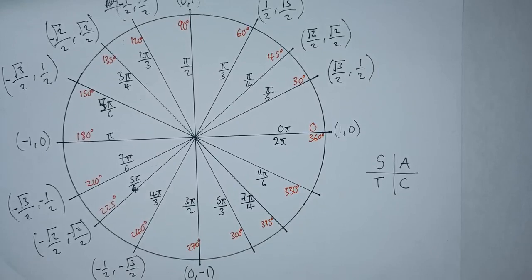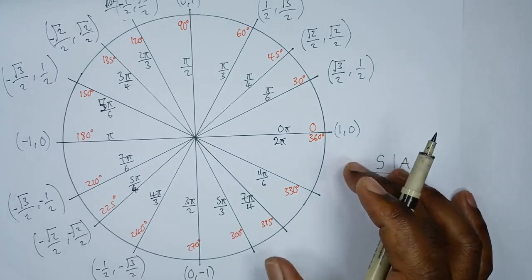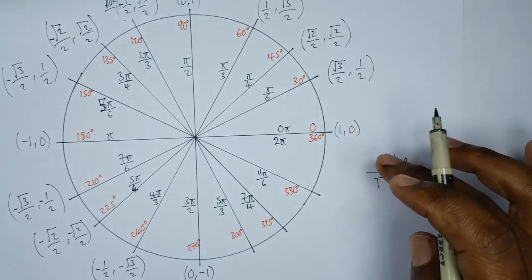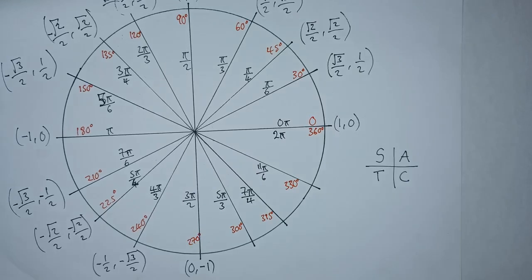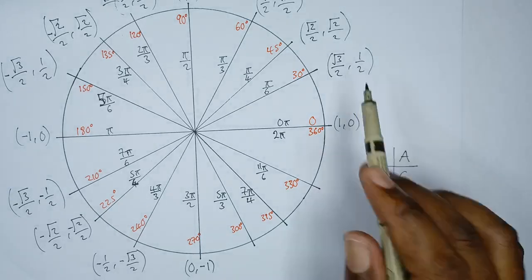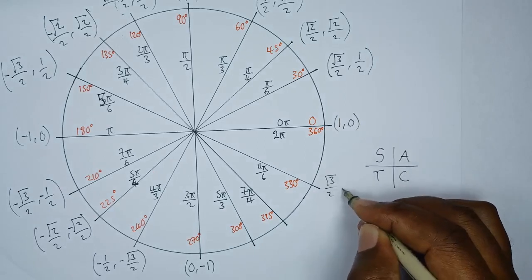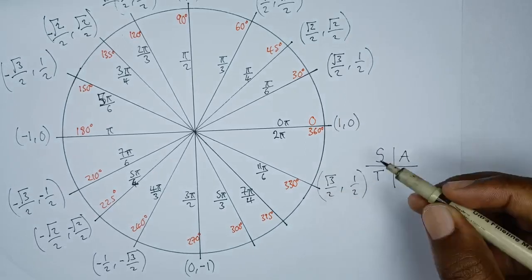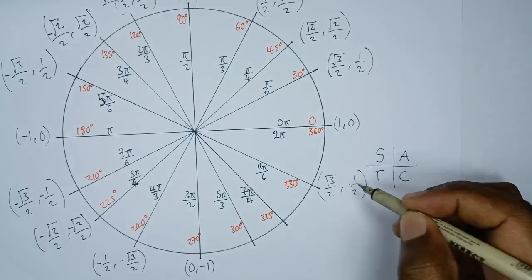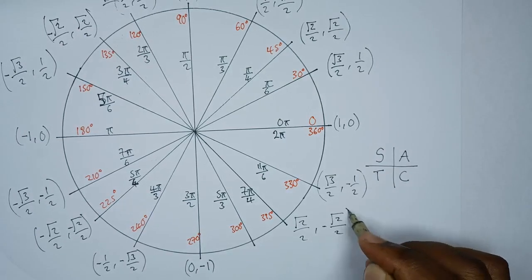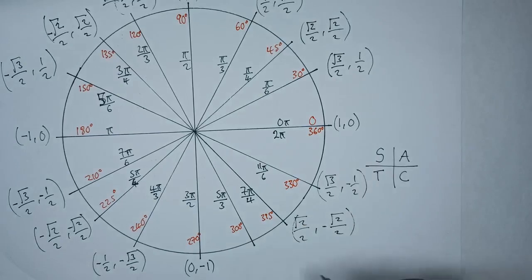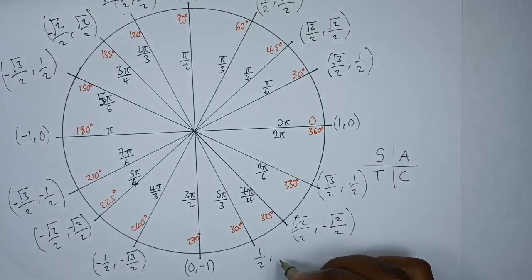We're only remaining with the fourth quadrant. In the fourth quadrant, only cos is positive, meaning sin is negative. The coordinates are (root 3 over 2, −1/2), (root 2 over 2, −root 2 over 2), and (1/2, −root 3 over 2).